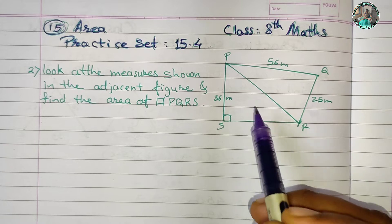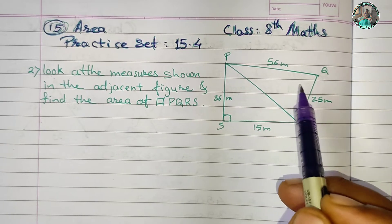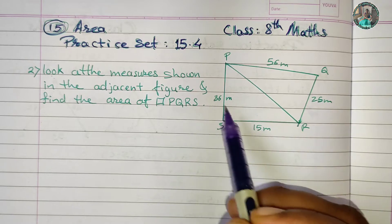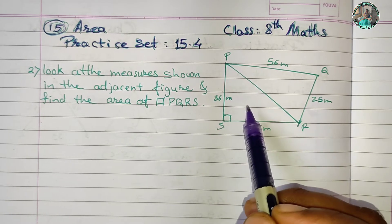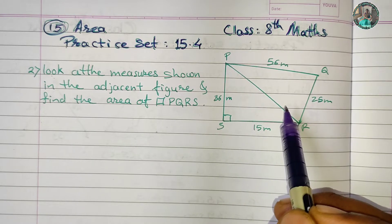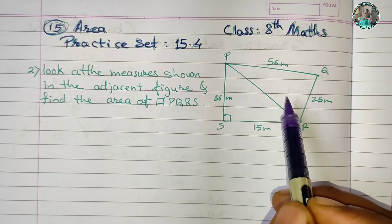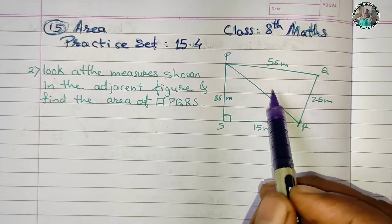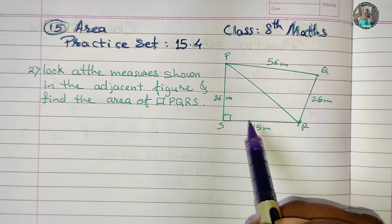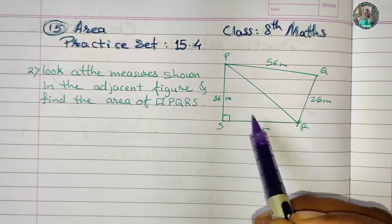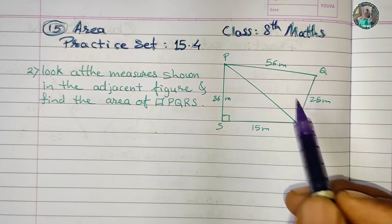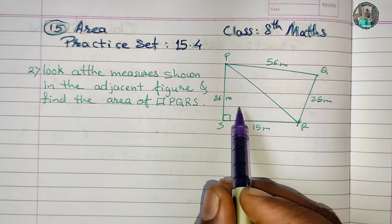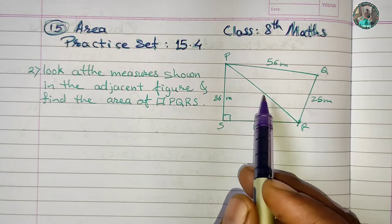We have to find the area. The second triangle area requires PR length. To find PR length, we use the Pythagoras theorem. Then when we have both triangle areas, we add them to find the quadrilateral PQRS area. The question is easy — we have three steps: use Pythagoras theorem to find the length, then find both triangle areas, and add them.